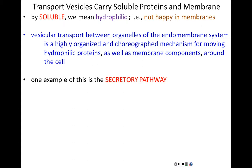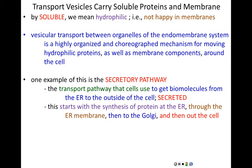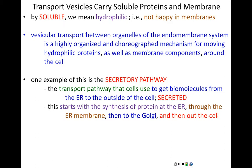One example is the secretory pathway — the secrete part of eat and secrete. This is getting things from inside the cell outward: making something in the ER, moving it to the Golgi, and then eventually getting it to the cell membrane and releasing it into the extracellular space. This pathway starts with synthesis of a protein or lipid at the ER, transport to the Golgi where it's modified, and from the Golgi it eventually makes it out of the cell for secretion.